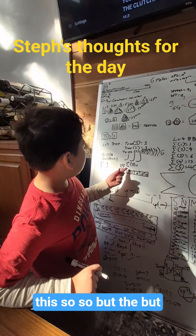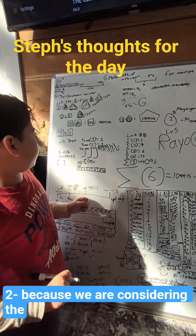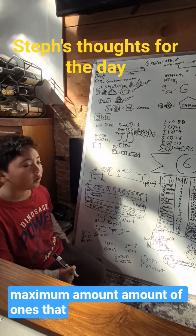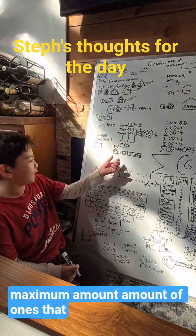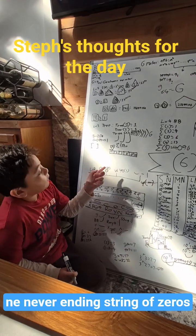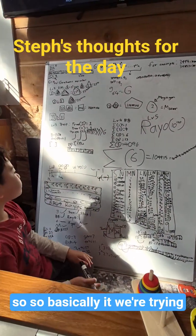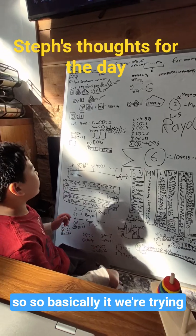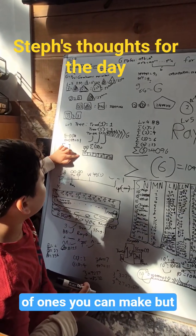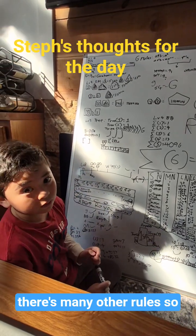This doesn't mean Sigma(2) equals 2, because we're considering the maximum amount of ones that could possibly be on the never-ending string of zeros. Basically, if we're trying to find the maximum amount of ones you can make, there are many other rules to consider.